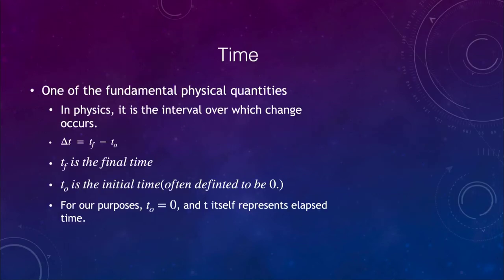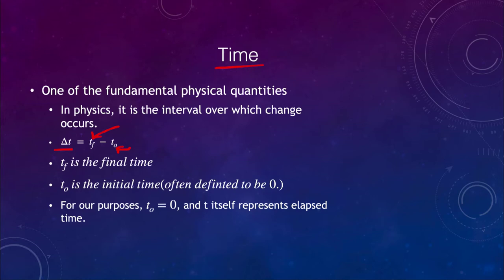One of the things we're going to start off with is actually time. Now what do we mean by time? Well, time in physics is the interval over which change occurs. So we're usually looking at a change in time given by delta t, which is the final time minus the initial time — t with a subscript f being the final time, and t with the subscript o being the initial time.